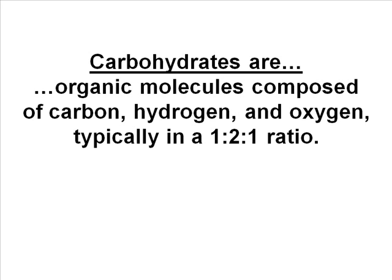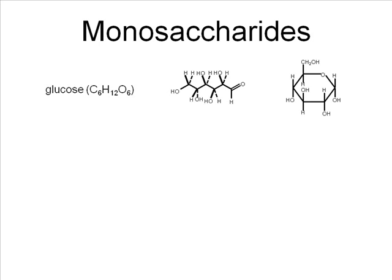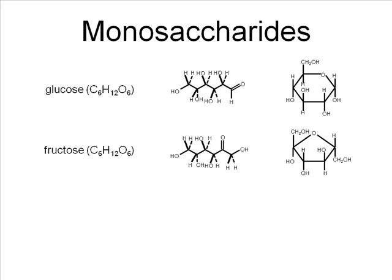The simplest of the carbs are monosaccharide sugars. These are the monomer used to build the more complex carbohydrate polymers. Examples of monosaccharides include glucose, shown here in both linear and ring form, and fructose, also shown in linear and ring form. Notice both of these have the same molecular formula — they're hexose sugars, or six-carbon sugars, with six carbons, 12 hydrogens, and six oxygens: a one to two to one ratio.